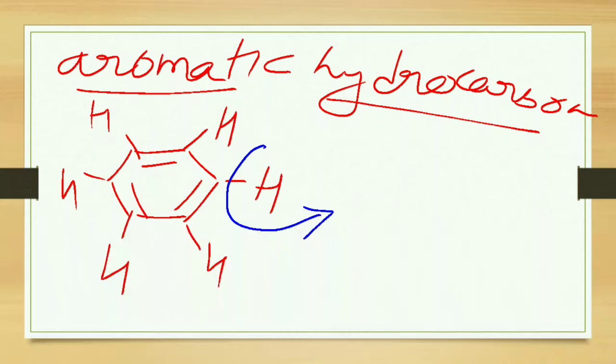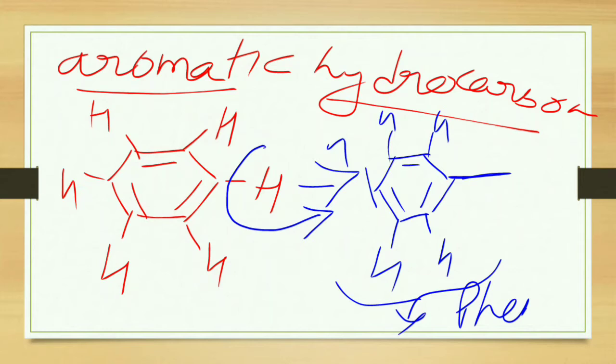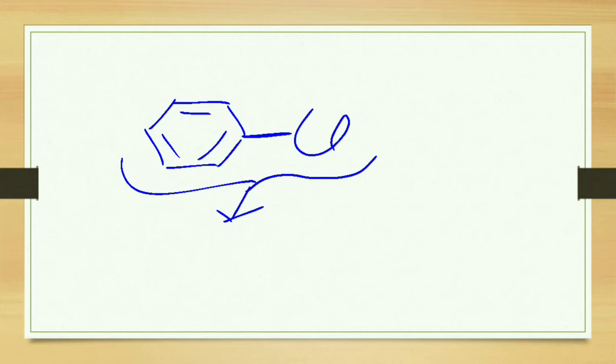The remaining group is our aryl group. In this example, the aryl group is called phenyl. When this phenyl group is attached with a halogen atom like chlorine, this is an aryl halide — this is chlorobenzene, which is an example of an aryl halide.